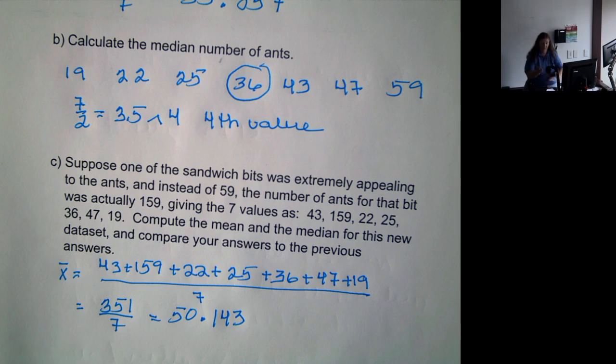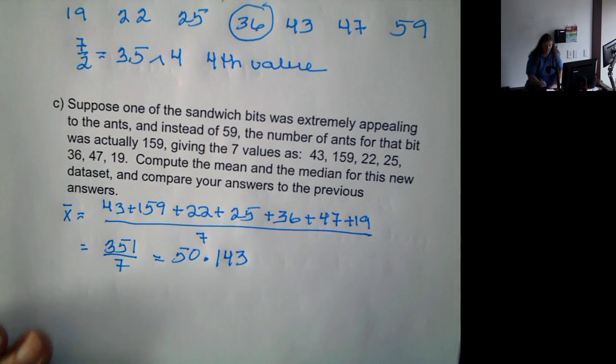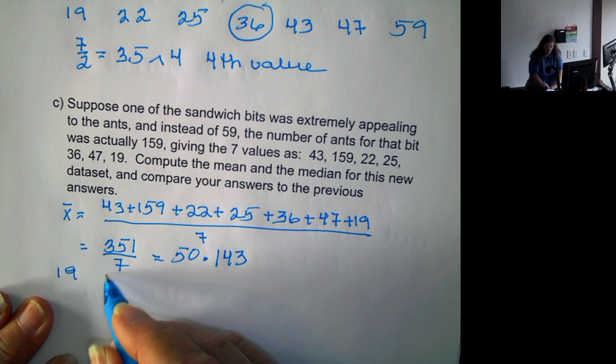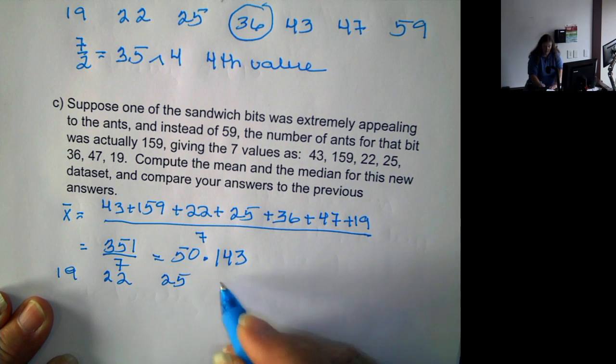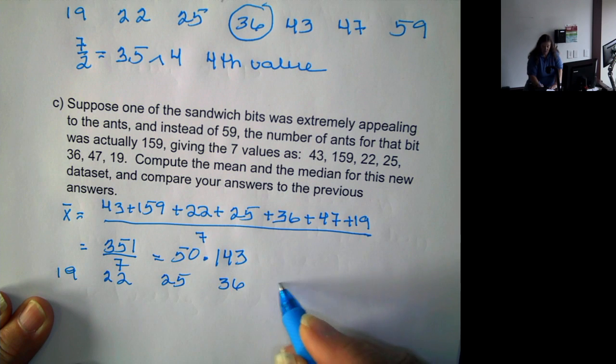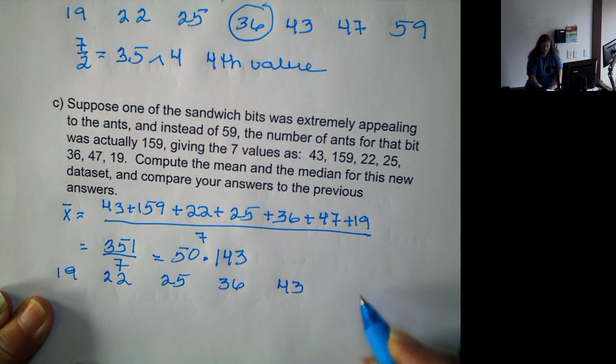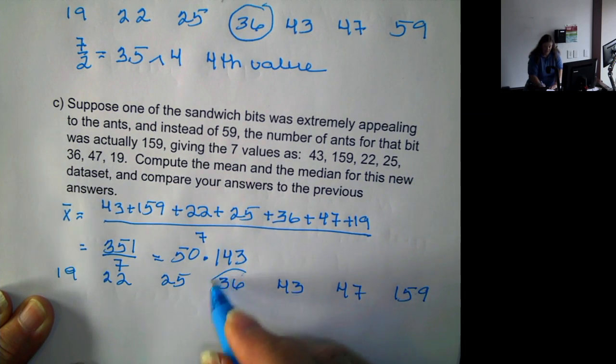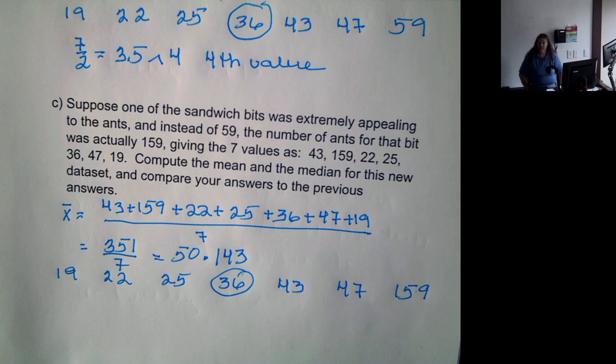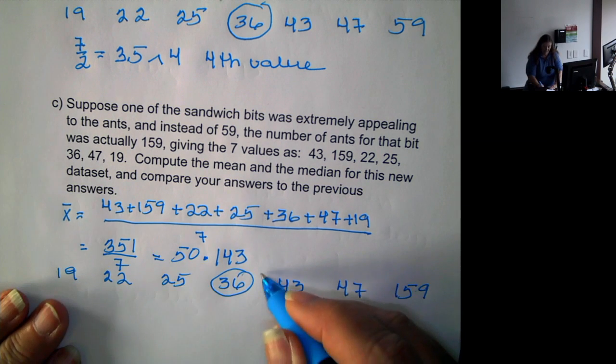However, if we put the numbers in order and find the one in the middle, we have 19, 22, 25, 36, 43, 47, and 159, 36 is still the one in the middle, so is still the median.